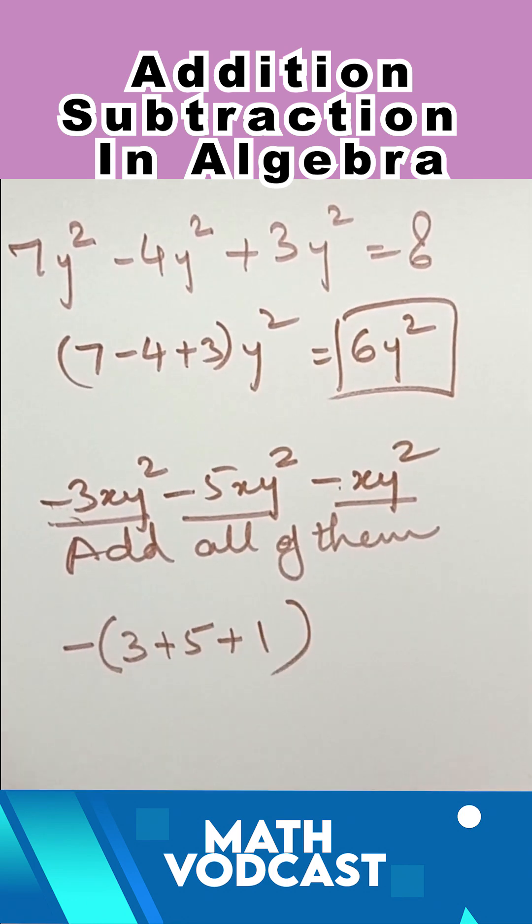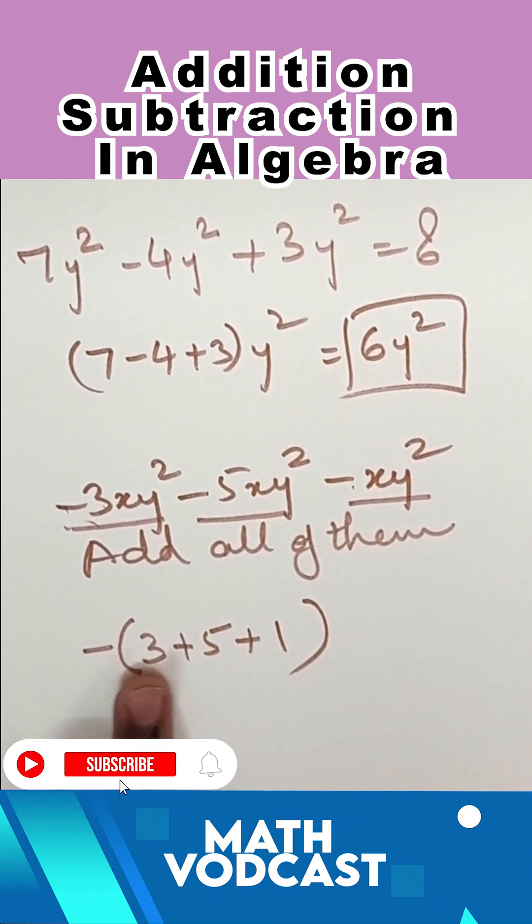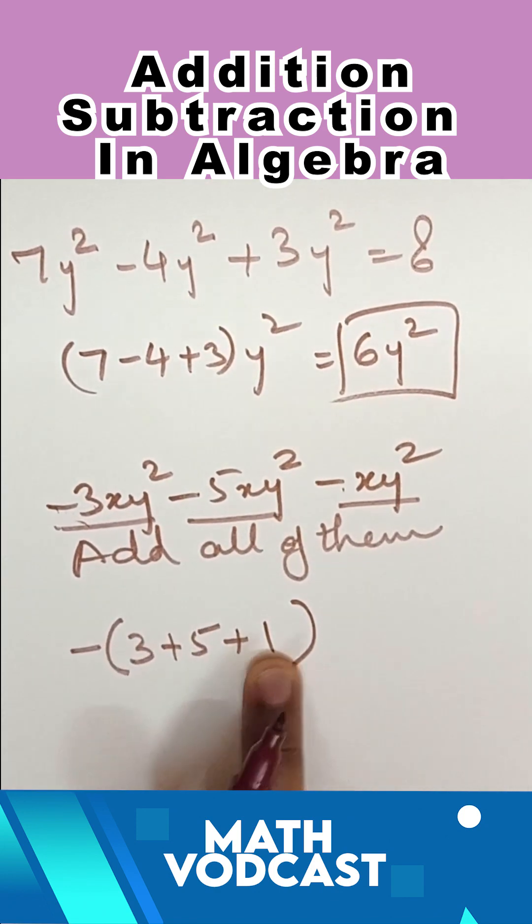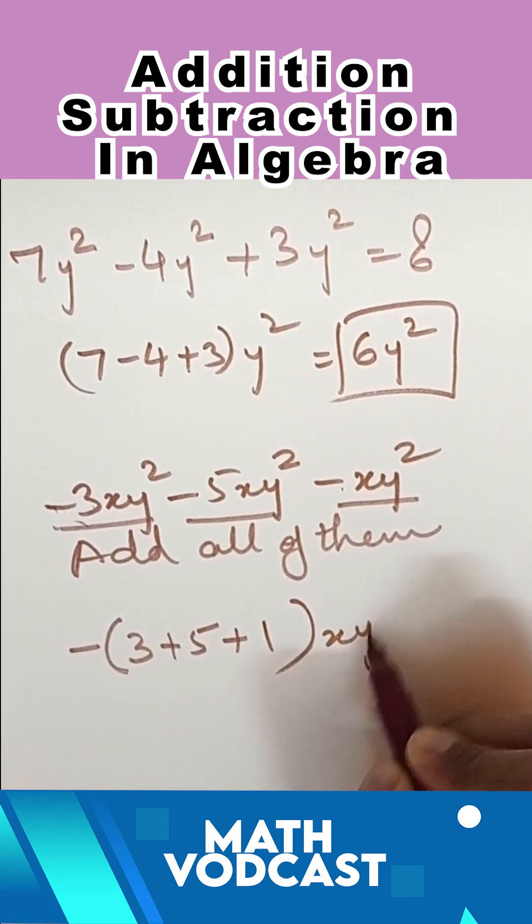Why am I writing all this in plus? Because when the minus sign is outside, this becomes minus 3, this becomes minus 5, and this becomes minus 1. So nothing is changing here, and we have xy².